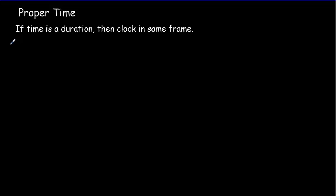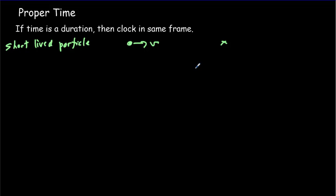Let's say you've got a short-lived particle. Some collision happens, that creates the particle, and typically it would be moving at a high speed. It travels along, and then it exists no more — it changes into other types of particle. Now, if I want to measure the proper time of the duration of that particle — the lifetime of that particle — what I've got to do is put my clock on a reference frame that's attached to the particle. So the reference frame is going to move along with the particle right until its lifetime ends. The clock's in the same frame as the thing that's enduring.